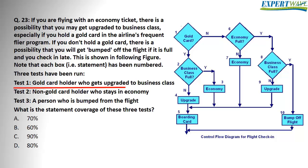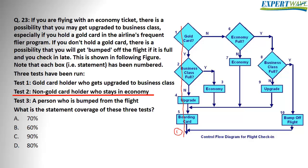First test case: a gold card holder who gets upgraded to business class. We have to go from statement one down to statement five. Second test case: a non-gold card holder. We have to go with the false branch of the first if statement — a non-gold card holder who stays in economy. So we're going to go through statements one, six, and seven.